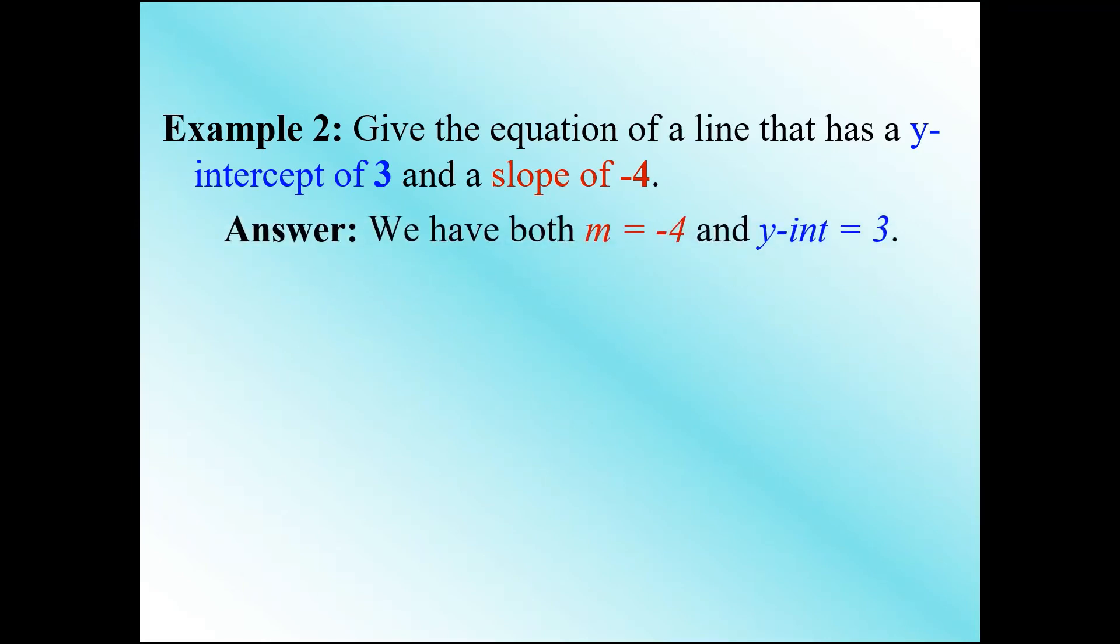We are already given the two pieces of information, but make a note: y-intercept is 3 and slope is negative 4. Make sure you do not switch these around. Slope is m value, so it's negative 4. The y-intercept is 3. Using the general form, the final answer is y equals negative 4x plus 3.